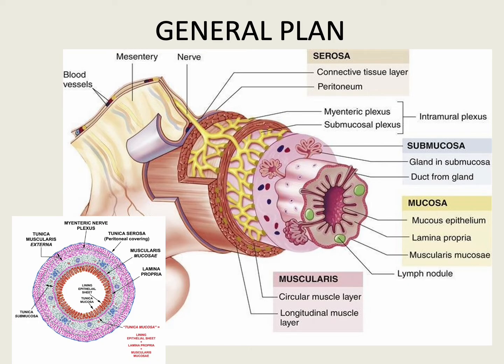The structure of the alimentary canal from the esophagus up to the anal canal shows several features that are common to all these parts. The wall of the tube is made up of the following layers from inner to outer side. The innermost layer is the mucous membrane, which is made up of the lining epithelium, a layer of connective tissue called the lamina propria that supports the epithelium, and then a thin layer of smooth muscle called the muscularis mucosae.